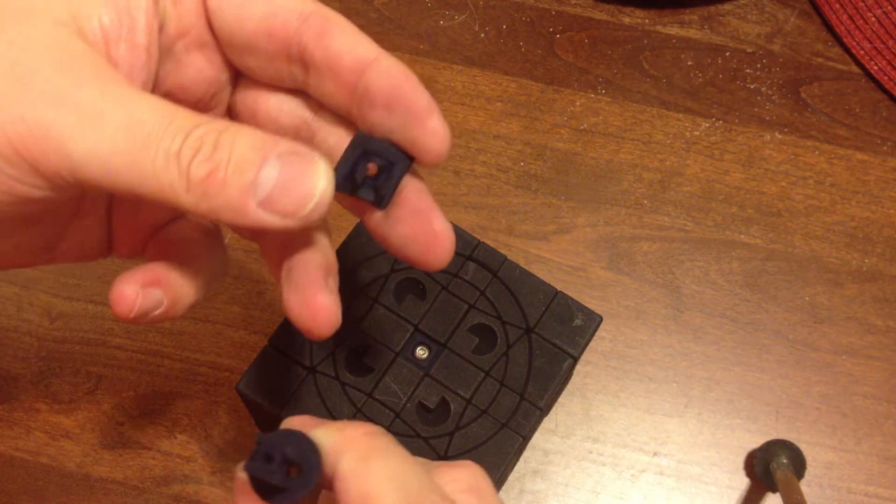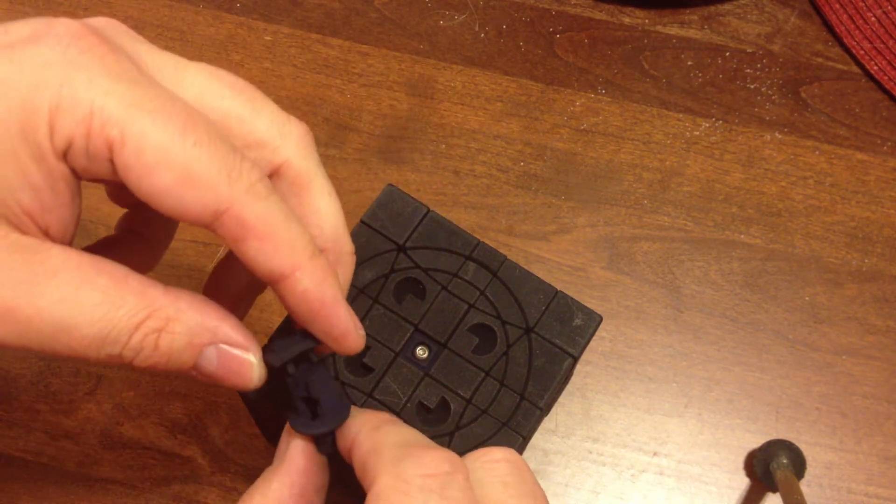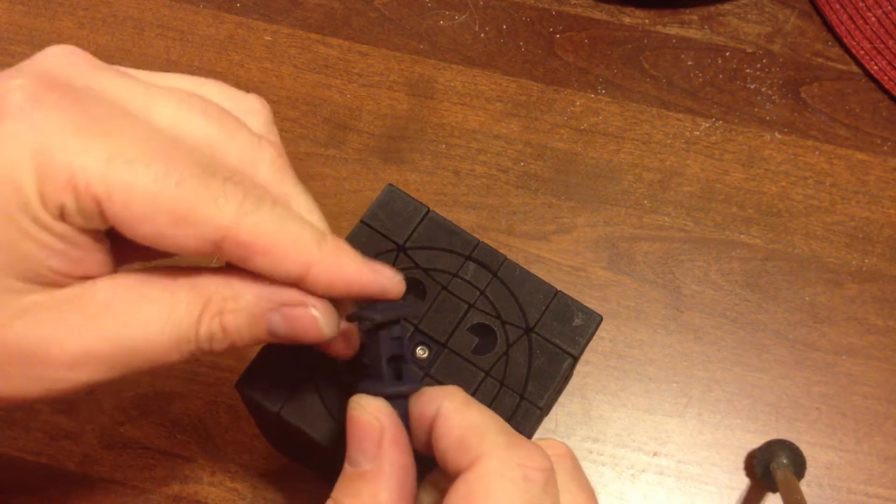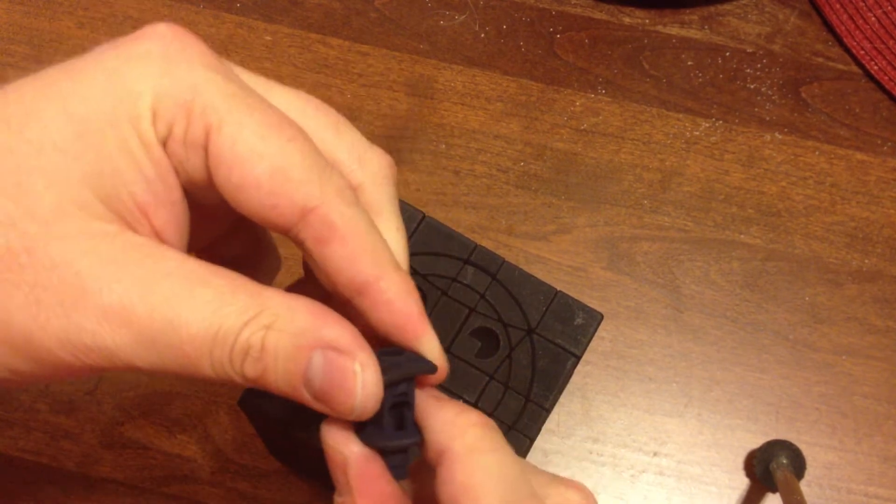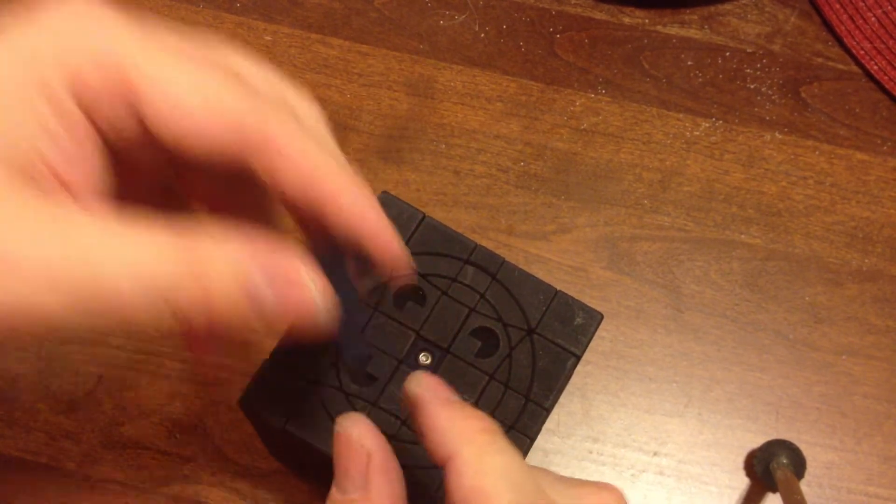And you see the teeth there on the bottom. They fit into this tongue and groove mechanism here I've got on the top. So when you put that together like that, nothing is going to rotate relative to one another.